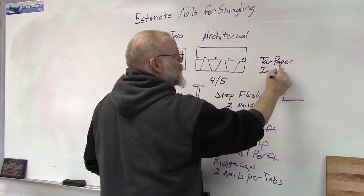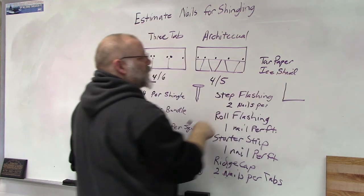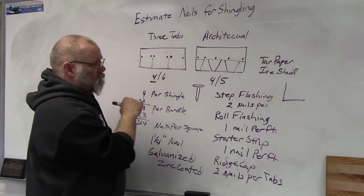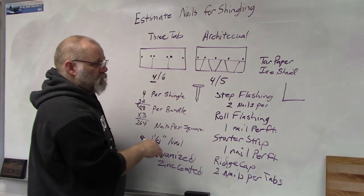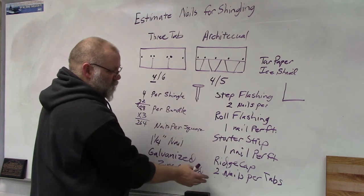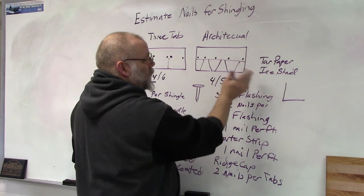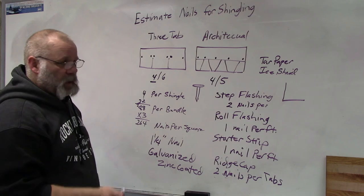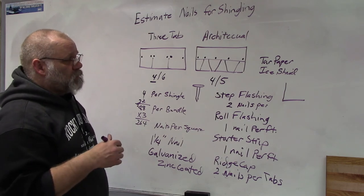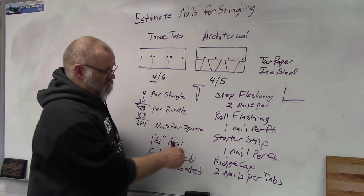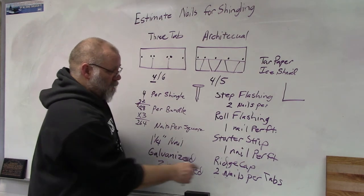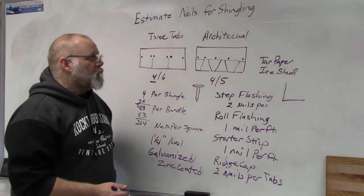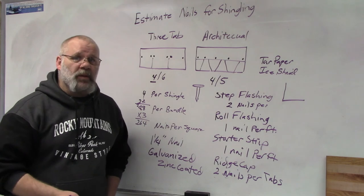Okay, so there's a lot more to figure in nails than just what you need for the shingles. You've got step flashing, roll flashing, starter strips, ridge caps, tar paper, ice shield. Make sure you get them all so you figure out how many nails you're going to need so that you don't have to run to the store when you get done because you're short of nails. Estimate nails for shingling.